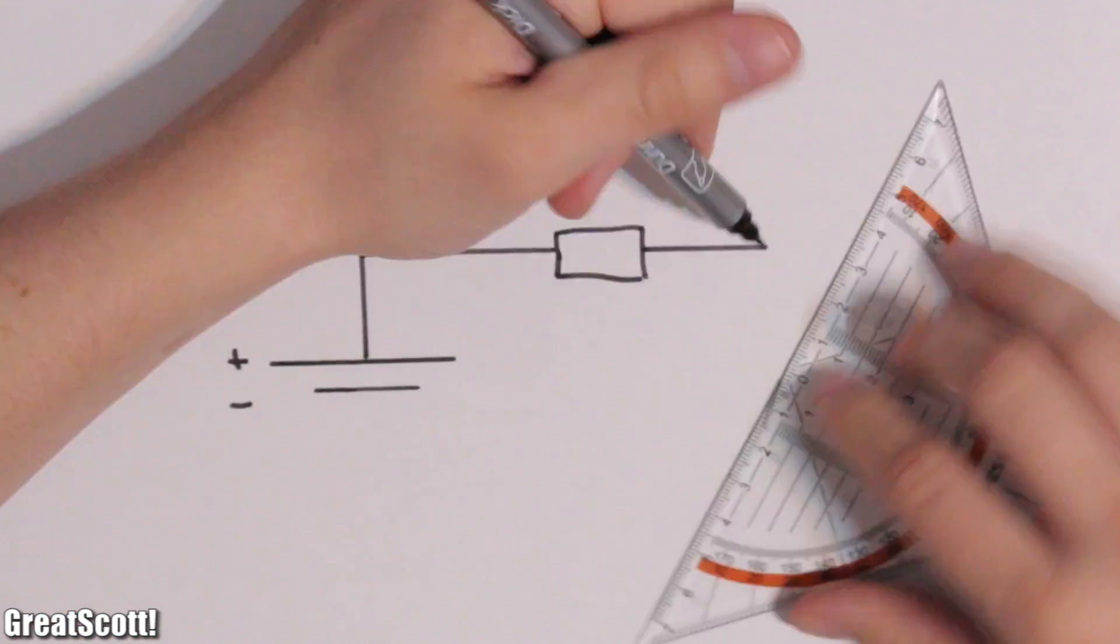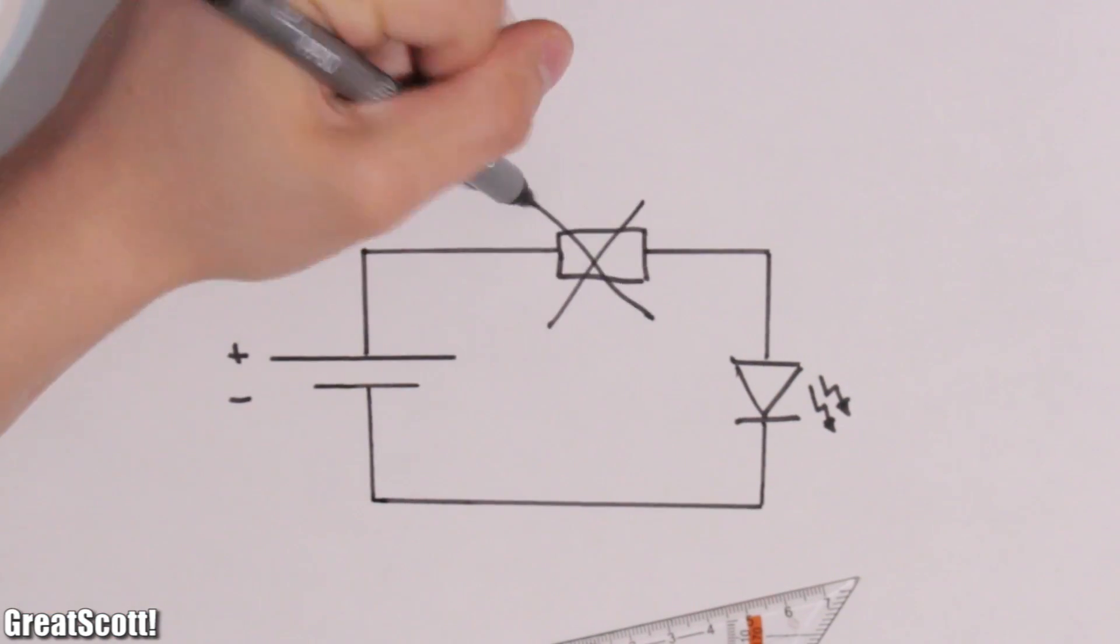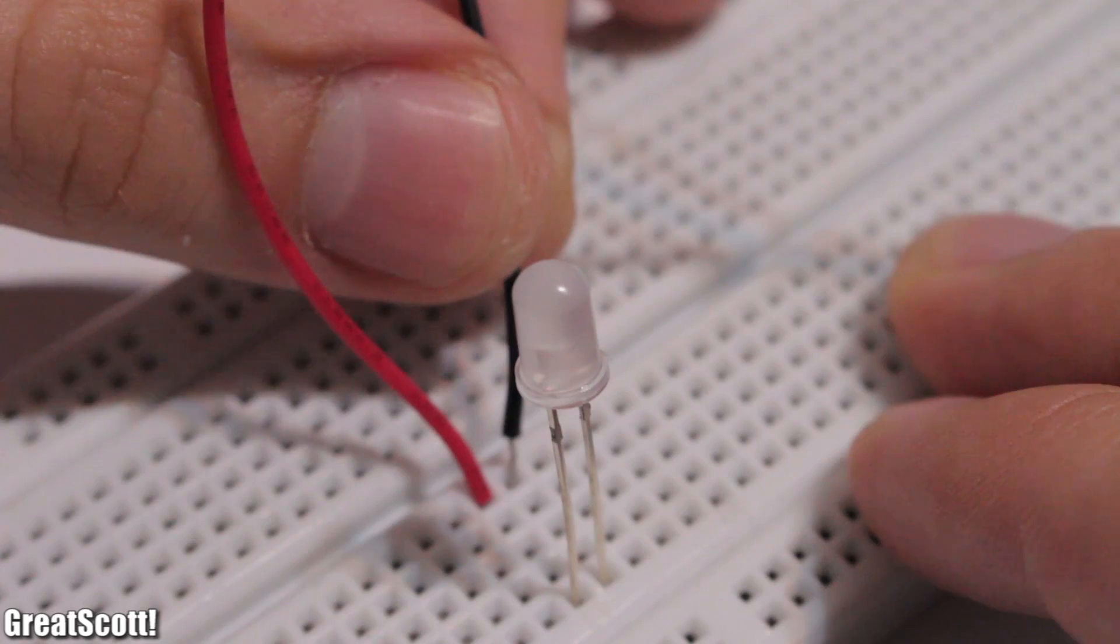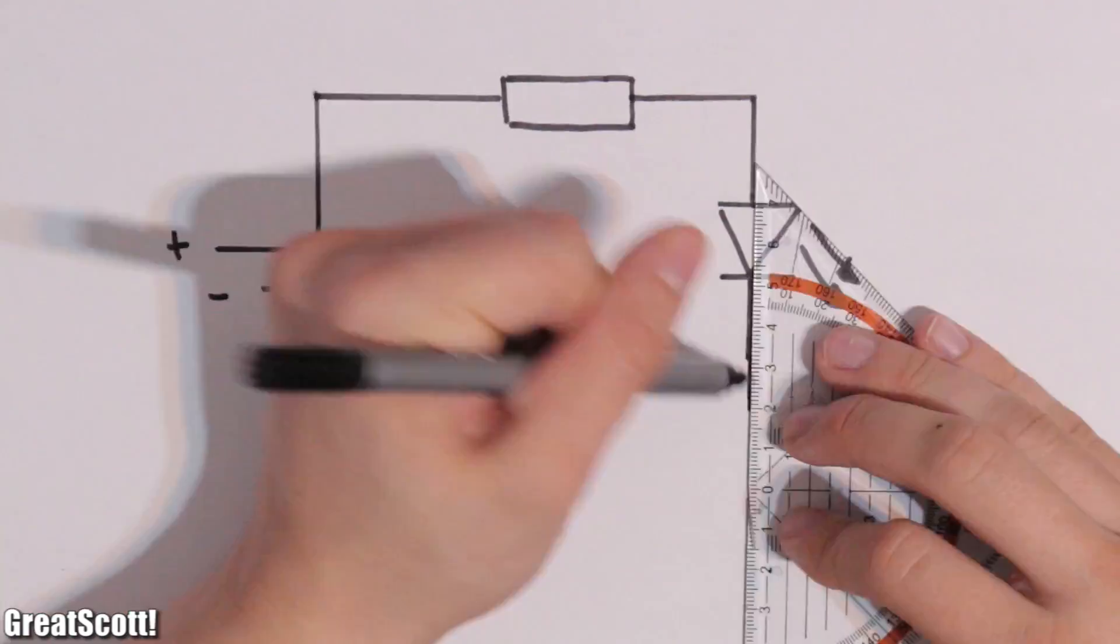The simplified circuit to light up an LED looks like this. If we would not use a resistor, the LED would die faster than you can say, well, shit. So what value does the resistor need?